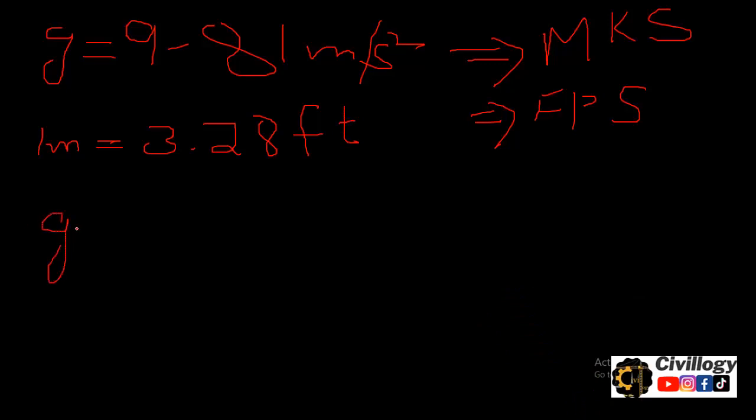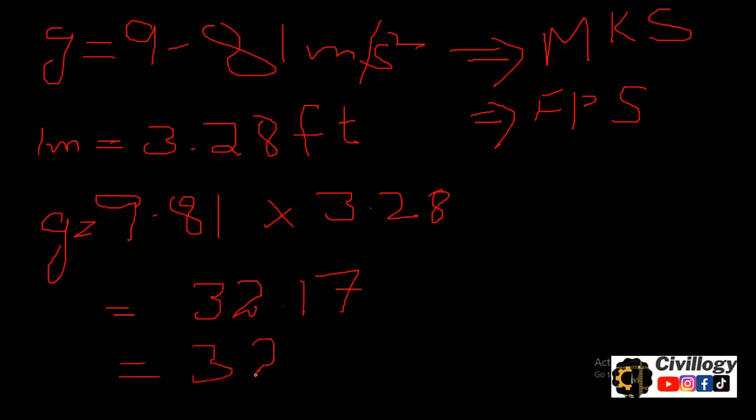So g will be equal to nine point eight one multiply by three point two eight. This value will become thirty two point one seven. Round it off, we will get thirty two point two.